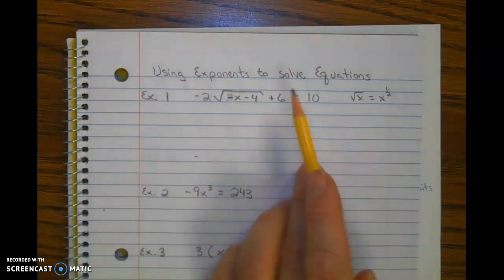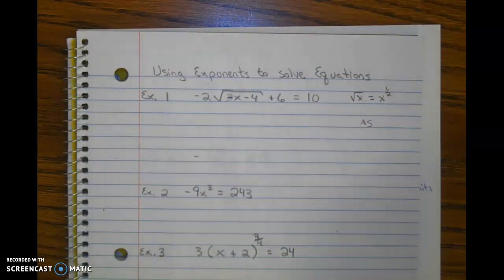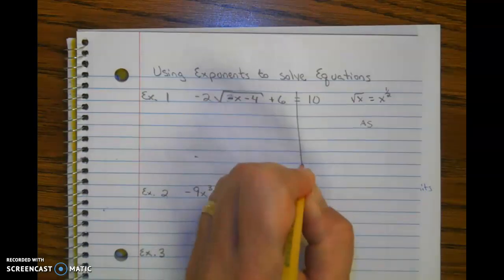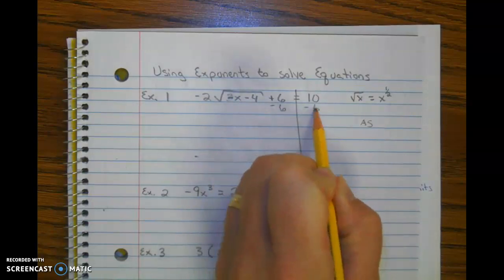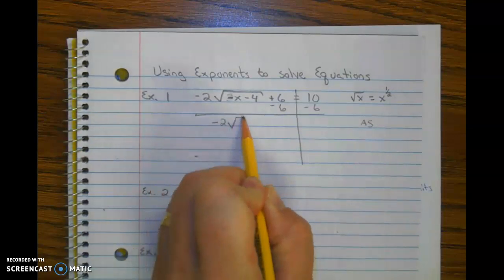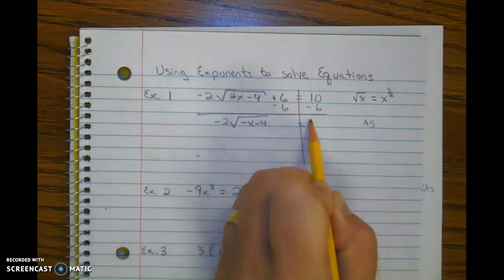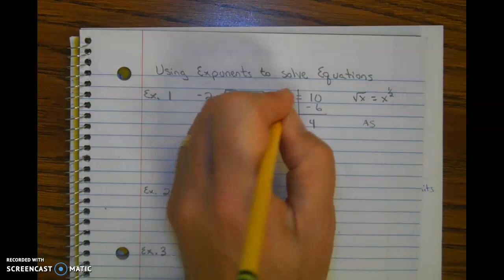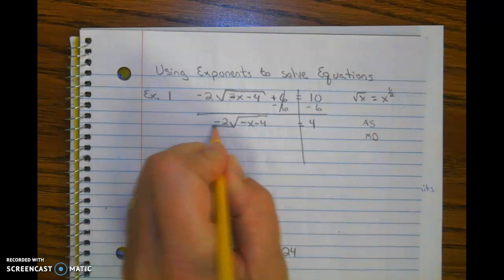As usual, whenever you solve, we undo GEMDAS. So we're going to start by undoing adding and subtracting. We're going to draw our line and undo the add 6 with subtract 6. Then we're going to undo multiplying and dividing. So we undo the times negative 2 with divide by negative 2.